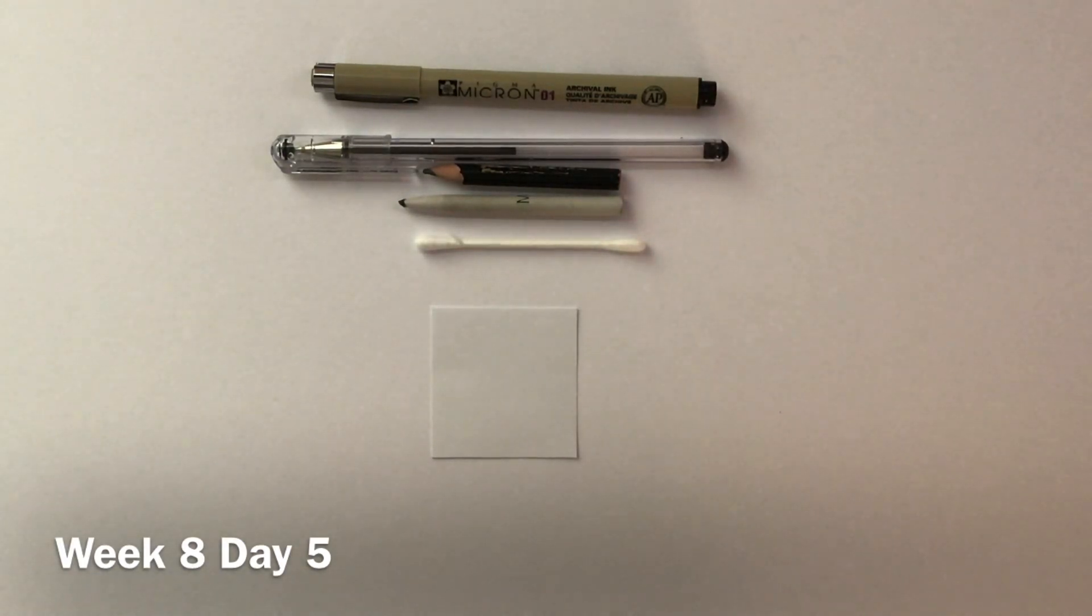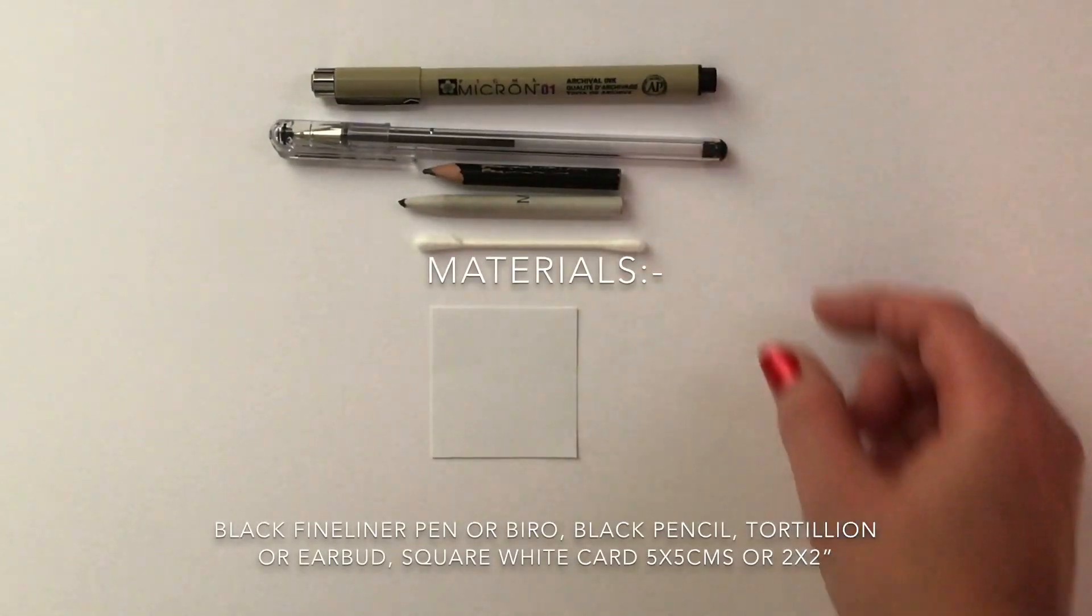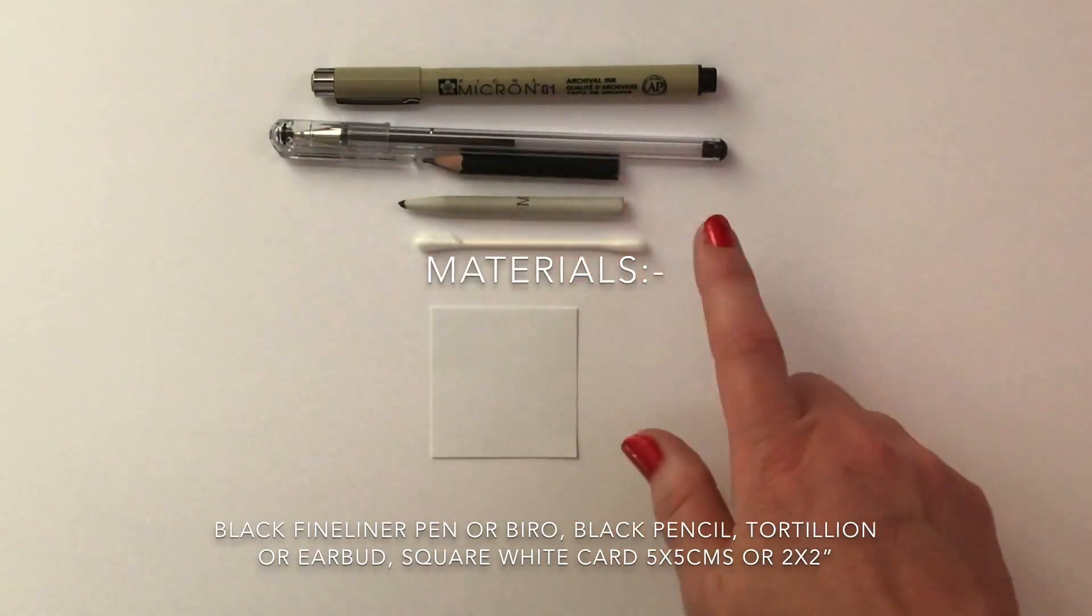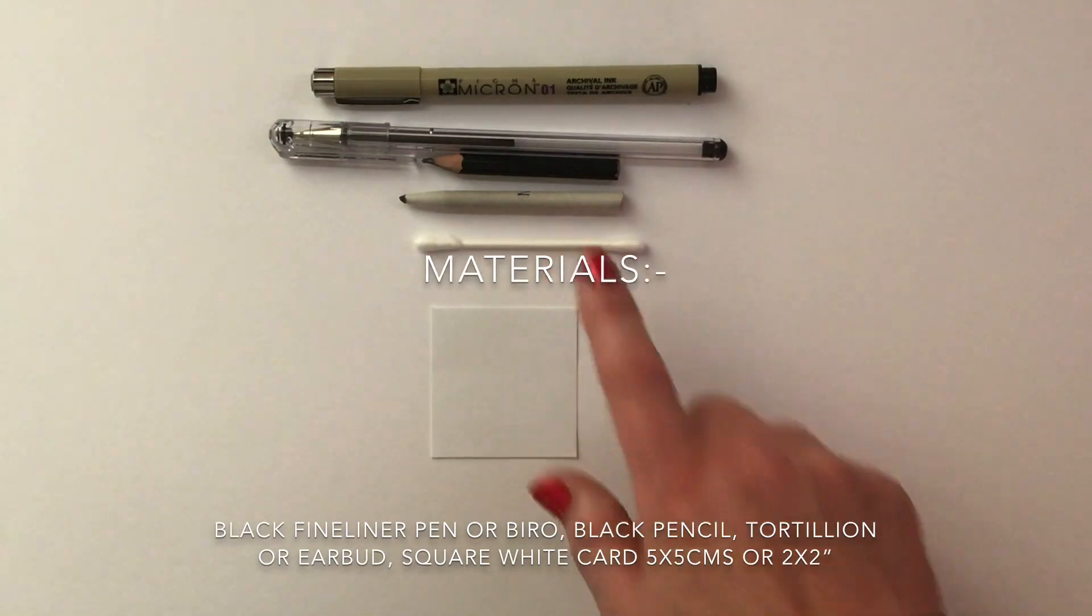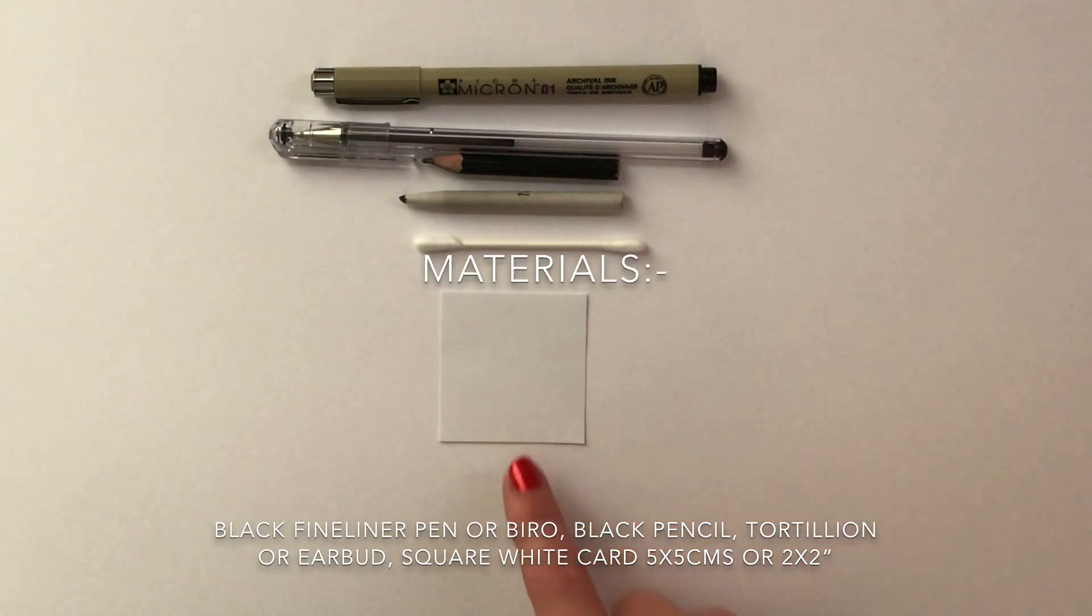The materials we're going to use are a black micron pen, if not a black biro, a black pencil, a tortillon or blending tool, if you haven't got one an earbud, and a square white piece of card measuring five by five centimeters or two by two inches.